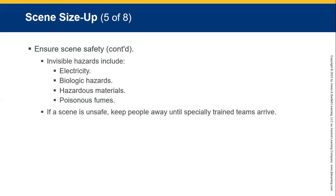Invisible hazards include electricity — always assume that a wire is live. Biological hazards: body substance isolation comes to mind — gloves, masks, respirators. Hazardous materials and chemicals, especially fentanyl, which is a big issue in America right now. It's an opiate and a substantially dangerous one. Poisonous fumes, such as carbon monoxide poisoning. If the scene is unsafe, please keep people away until trained personnel have arrived.